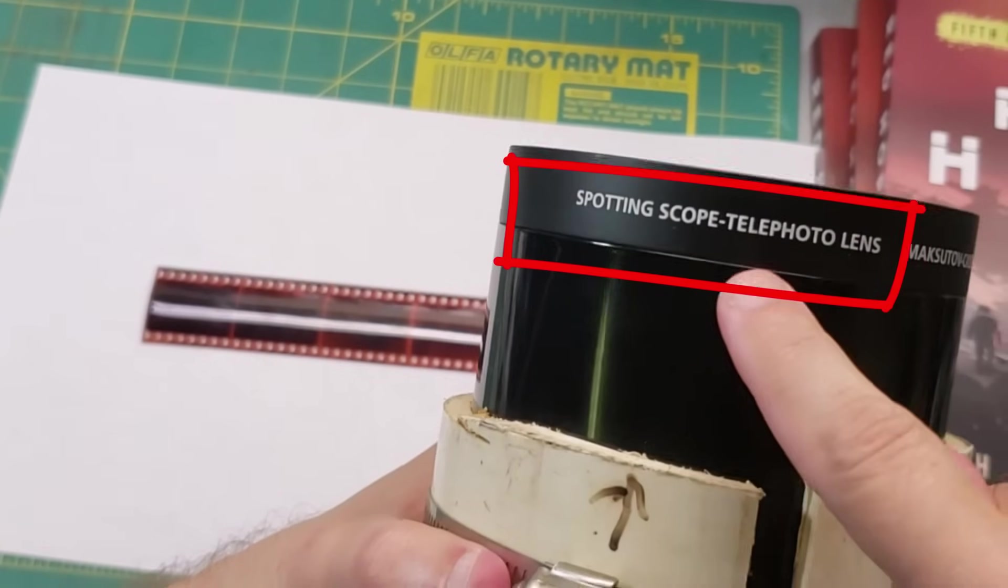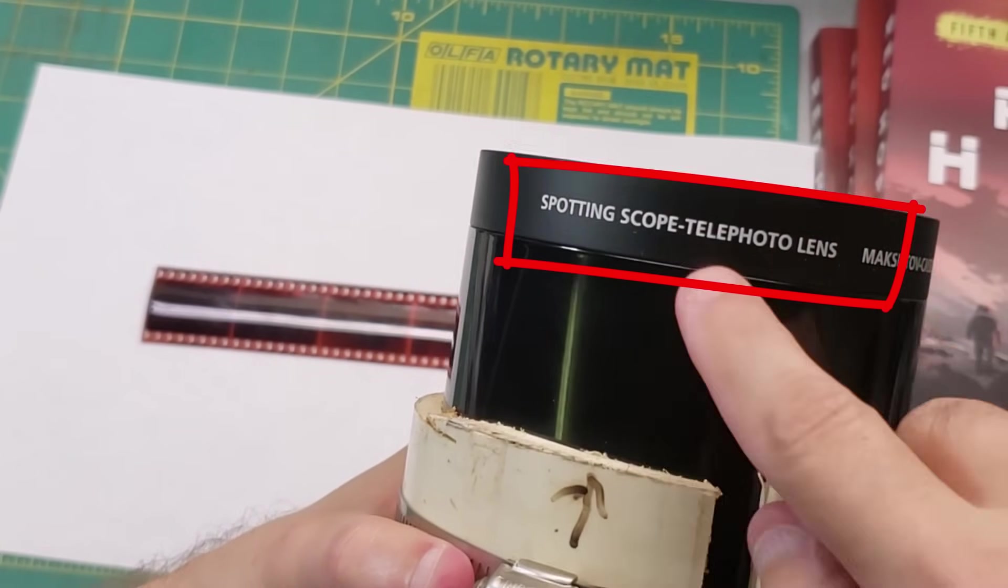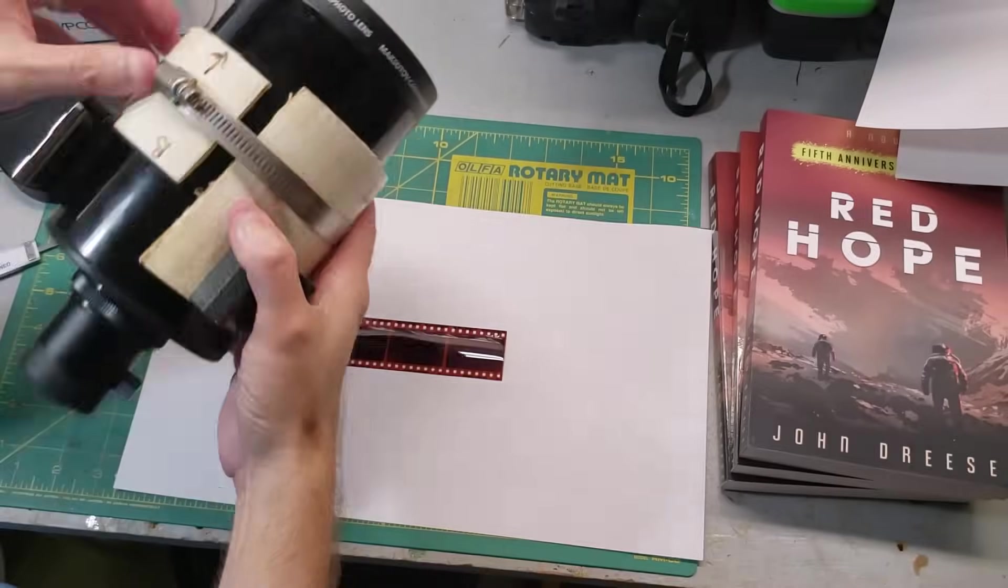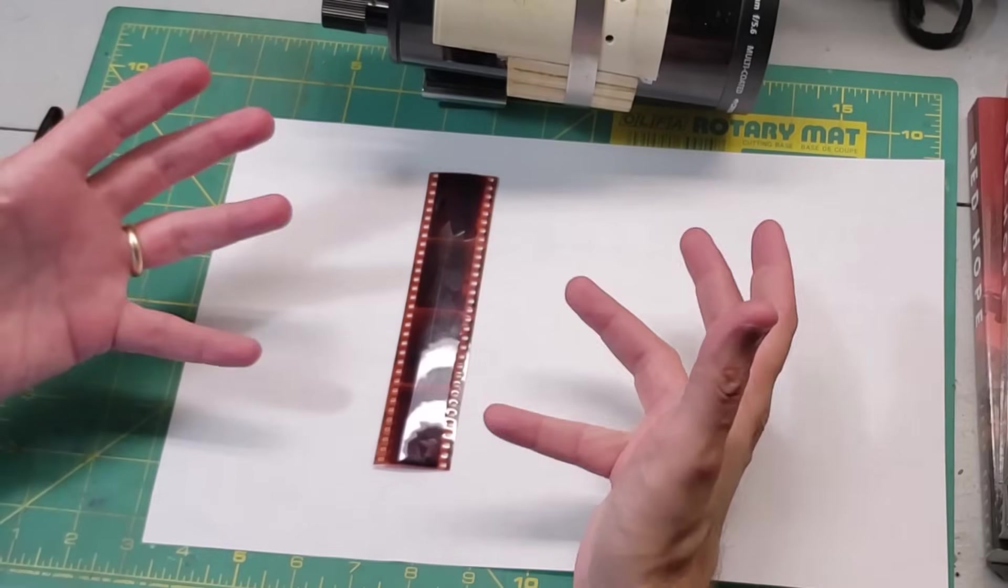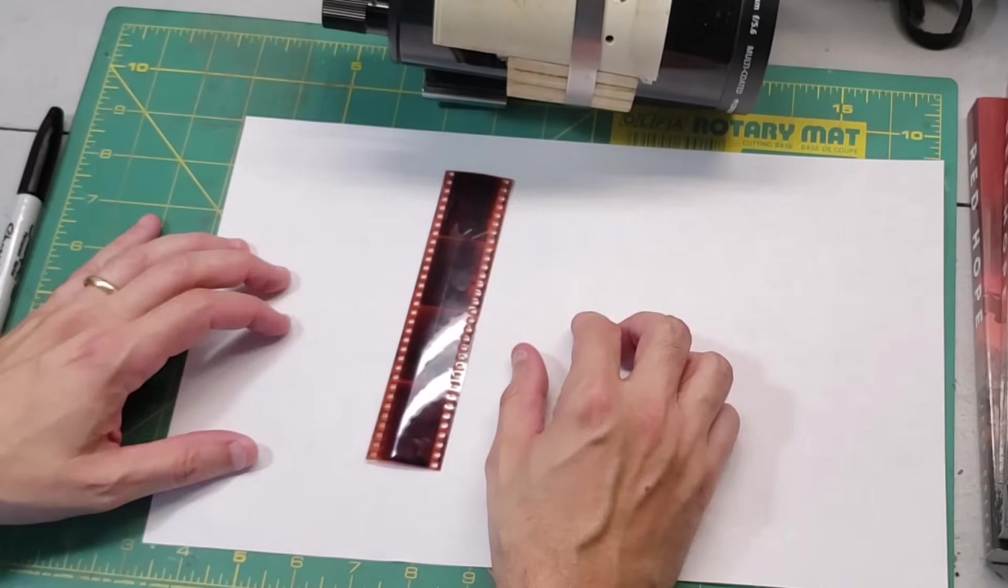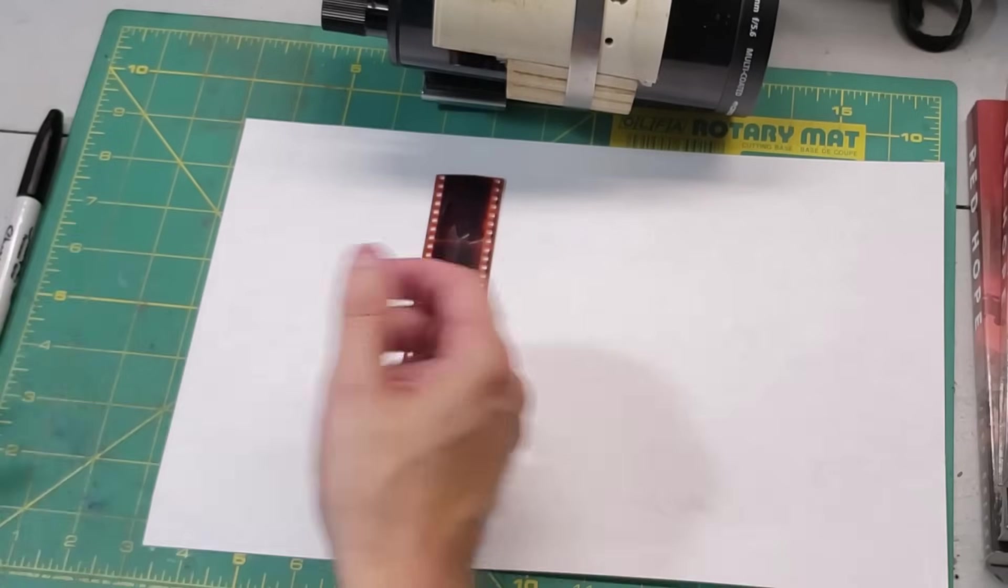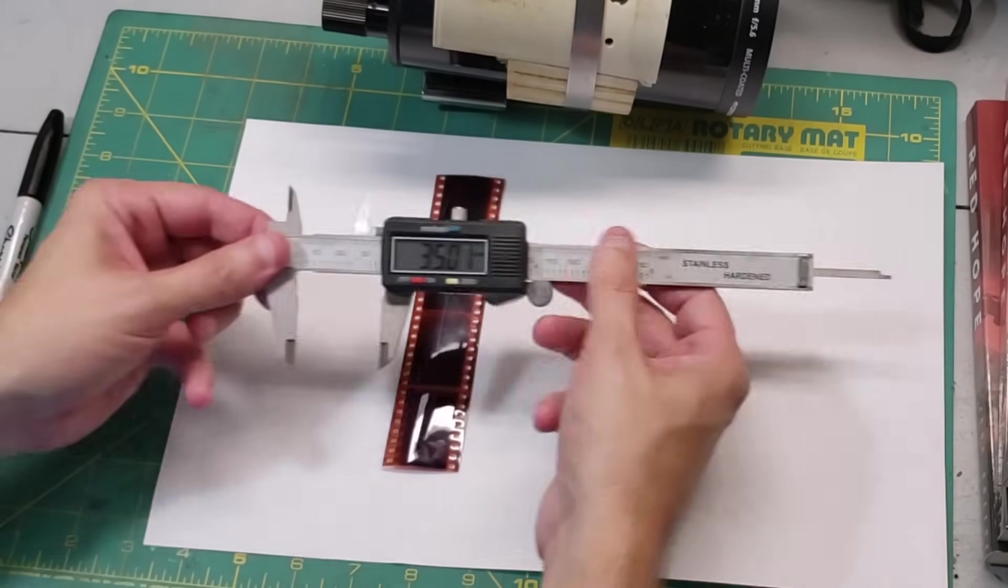This is the reason why that central mirror is so large: spotting scope and telephoto lens. So if you're as old as me, you'll instantly recognize this as a section of 35mm film containing one, two, three, four photograph negatives. The name 35mm comes from the width of the film.